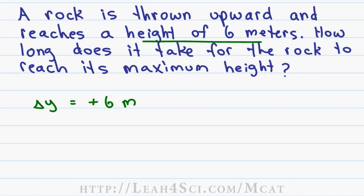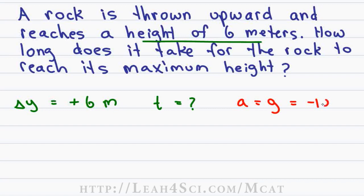In this case, it appears that we're only given one unit, but if you read the question carefully we're given two. We're told that the rock reaches a height of 6 meters, that means delta y is equal to positive 6 meters. We're asked for how long it takes to reach the maximum height, and that means time is our unknown. But to solve an equation in kinematics you need to have two givens and one unknown. The hidden given in this case is the acceleration, which is equal to gravity of negative 10 meters per second squared.